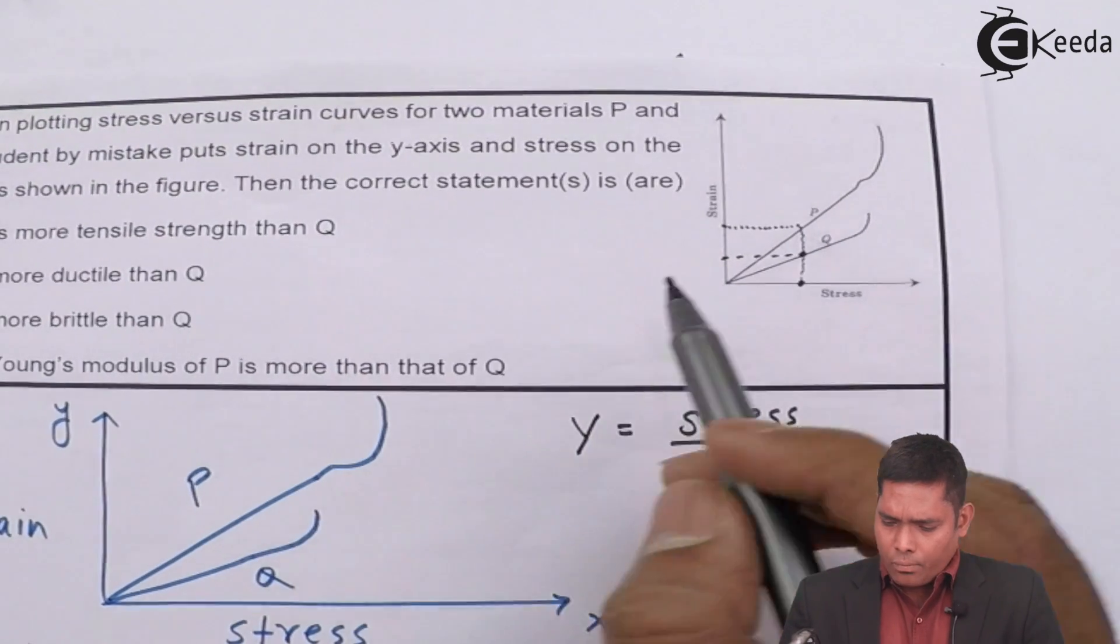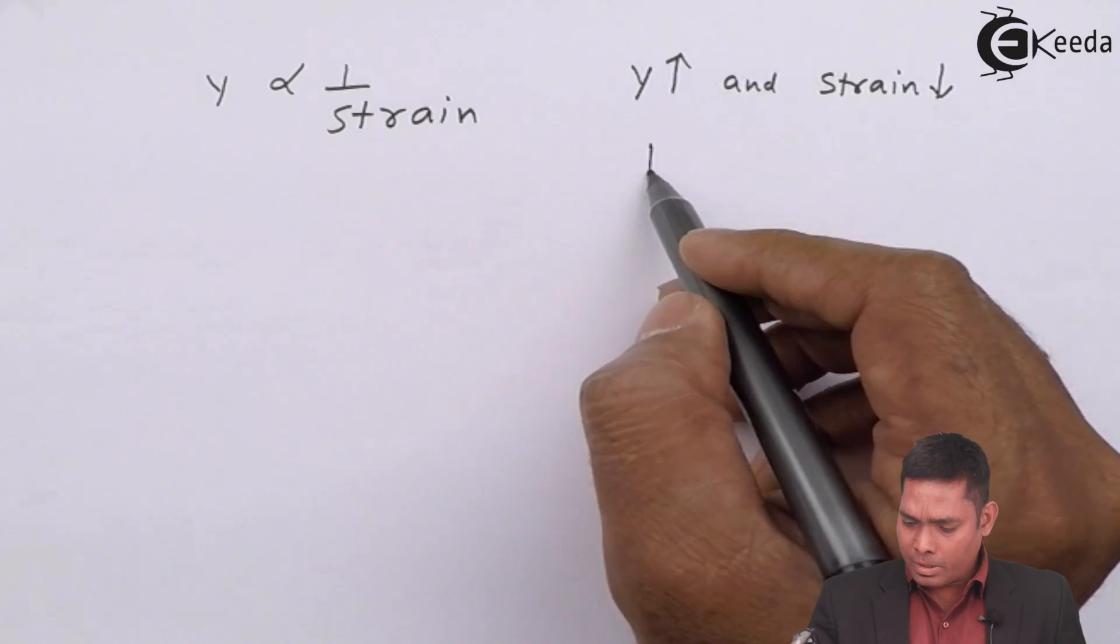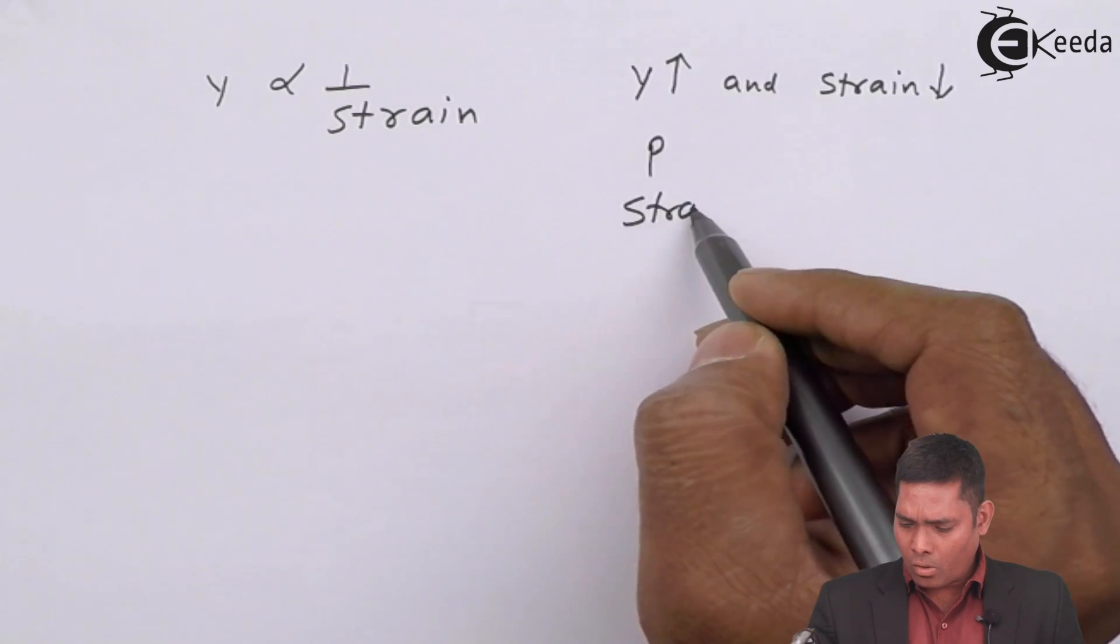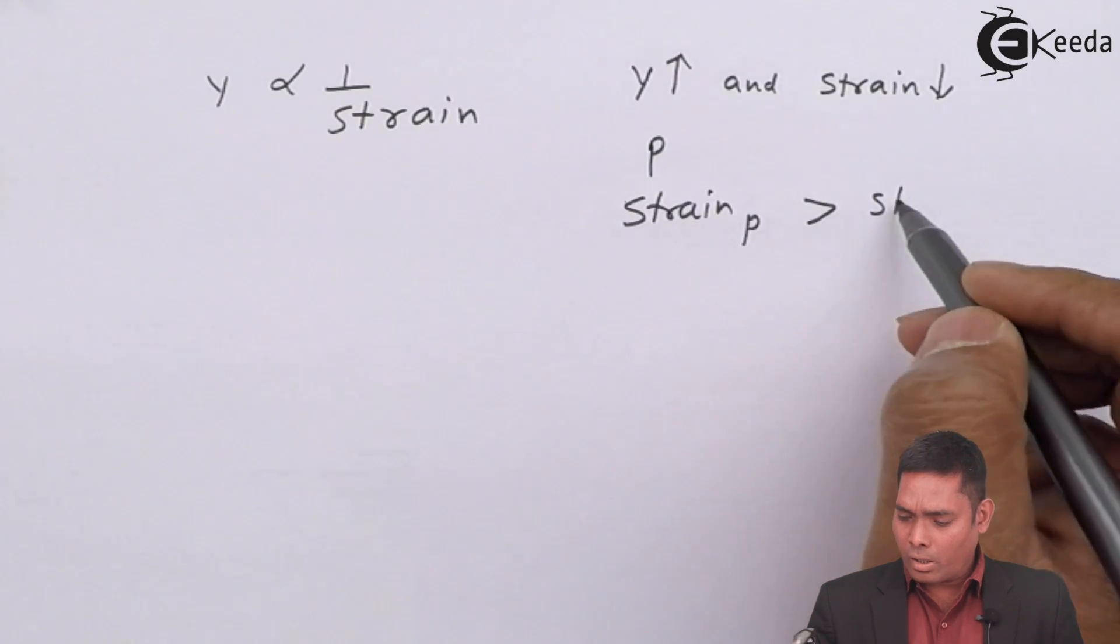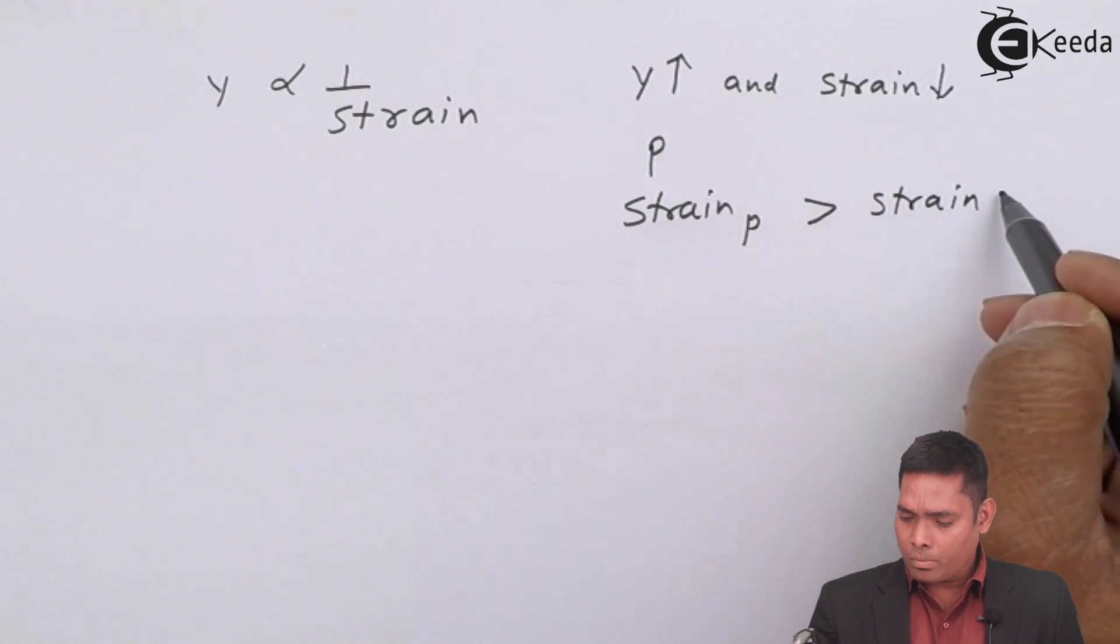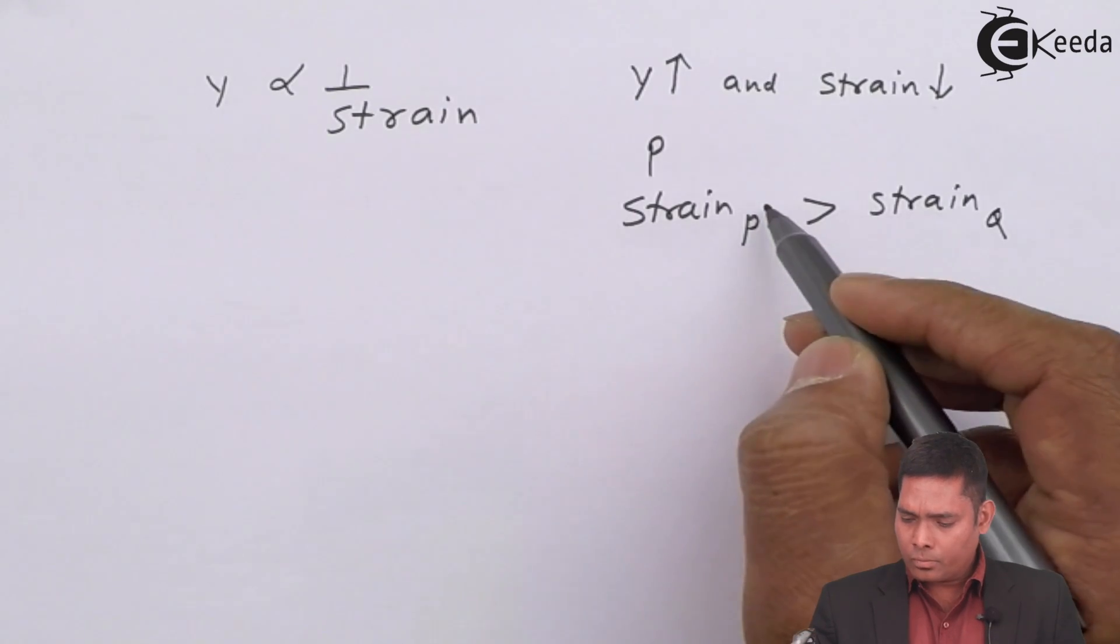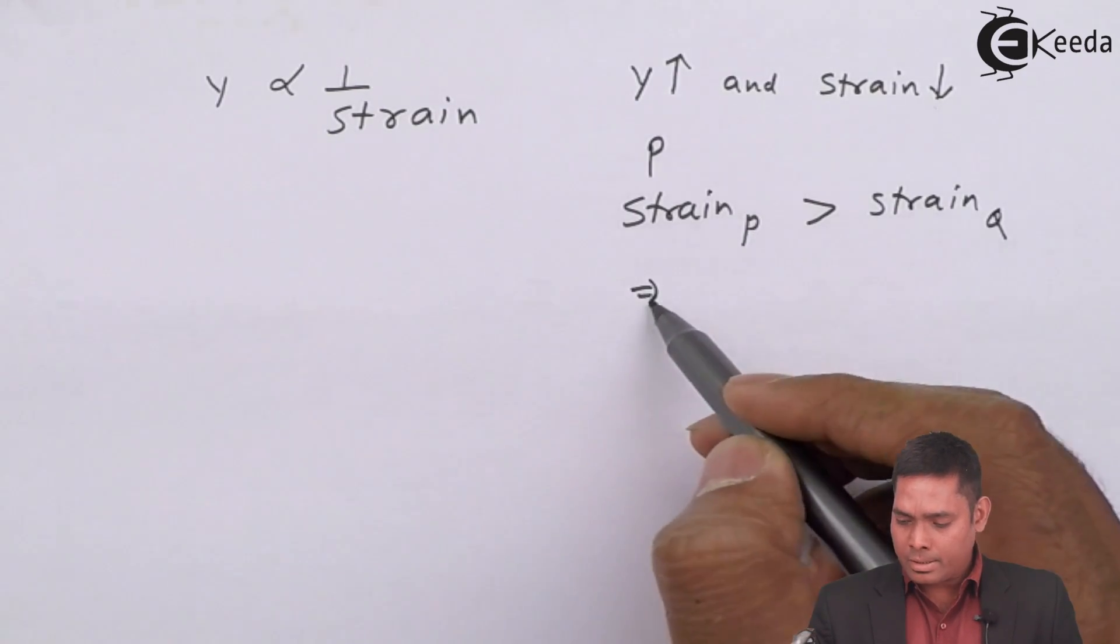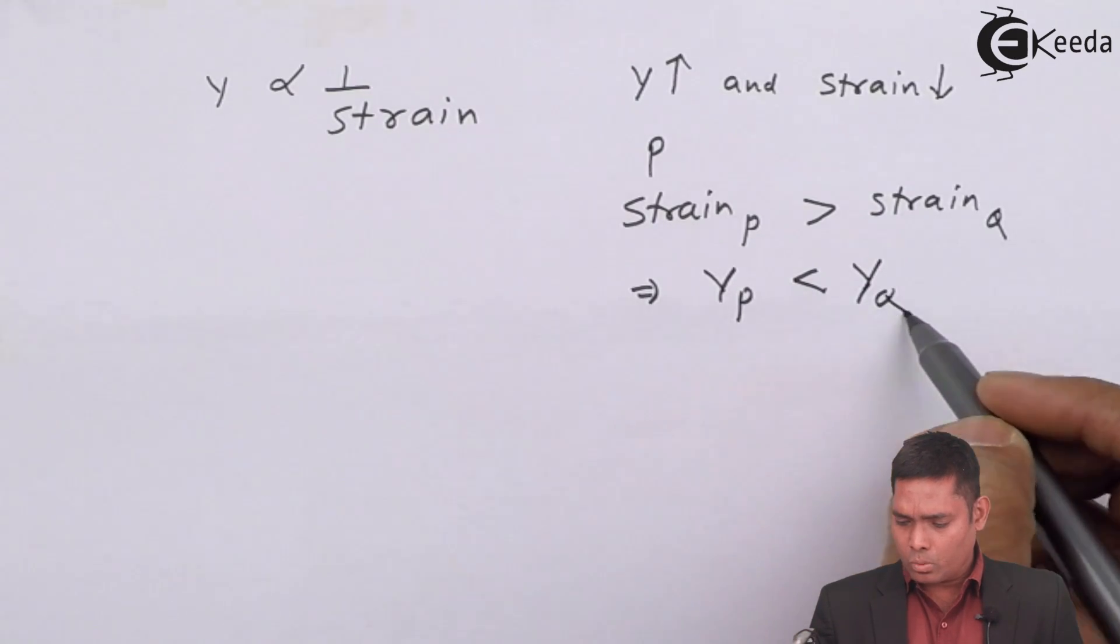In case of P and Q, P is having, material P strain of material P is greater than strain of material Q. If this is more, Y will be less. This implies Y of P is less than Y of Q.